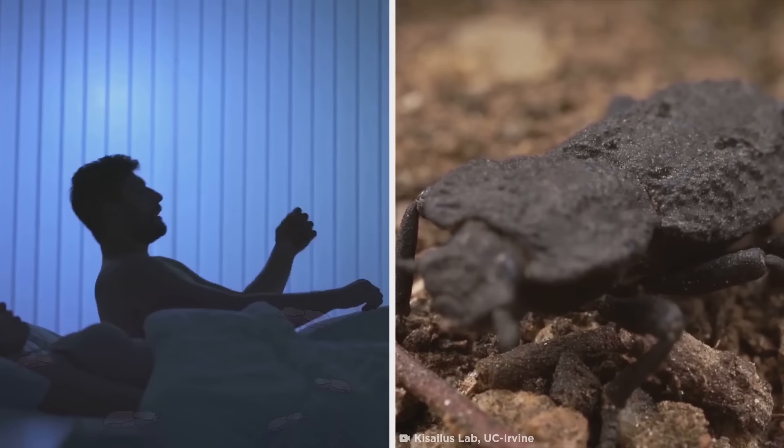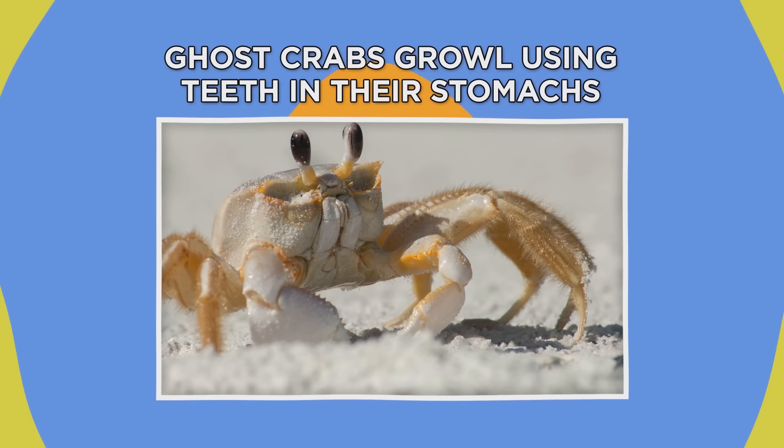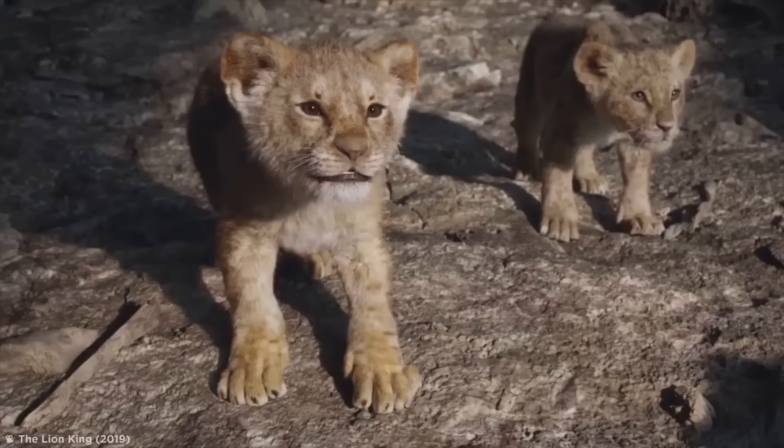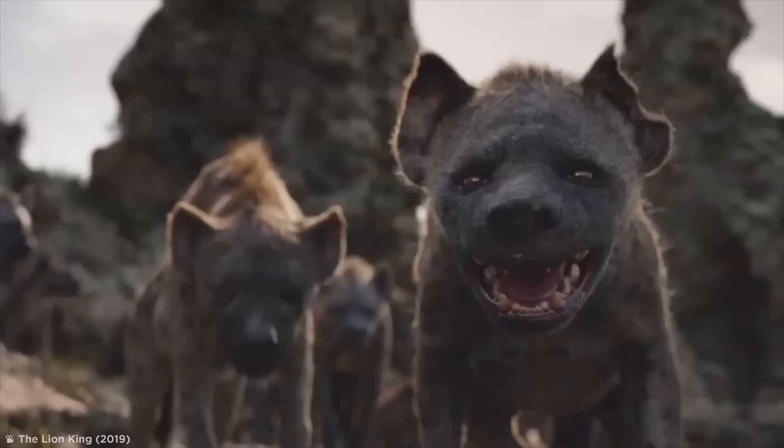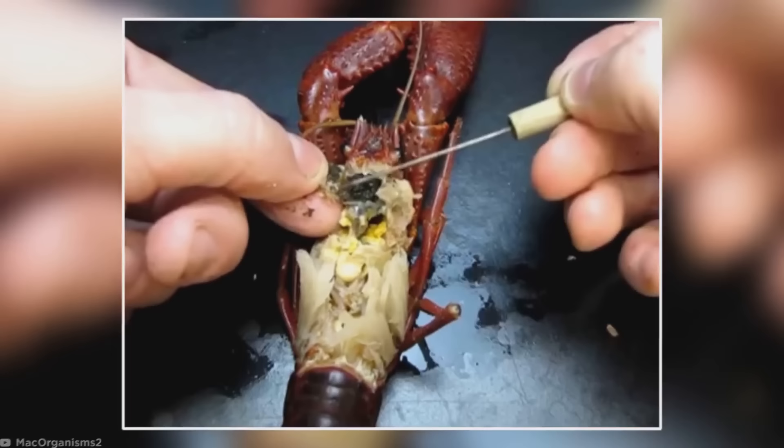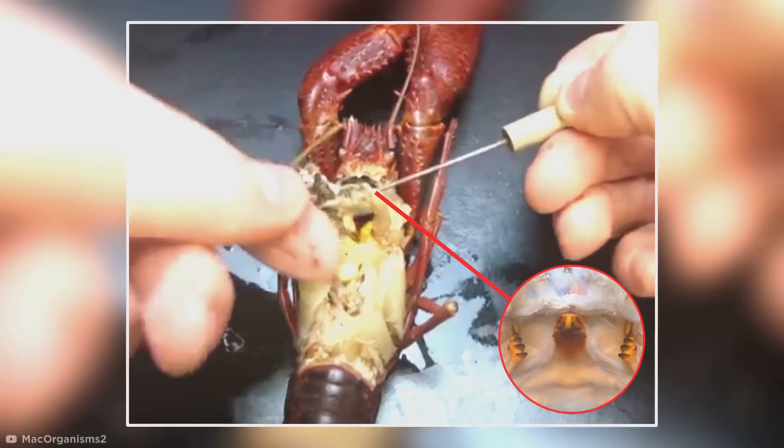Ghost crabs growl using teeth in their stomachs. Plenty of animals growl and bare their teeth when they feel threatened. But what happens when your teeth are located inside your stomach? Well, just ask a ghost crab. Although you probably had no idea, most crustaceans have tiny teeth in their stomach for grinding up food. But the ghost crab is the first shown to use them to make sounds for communication.